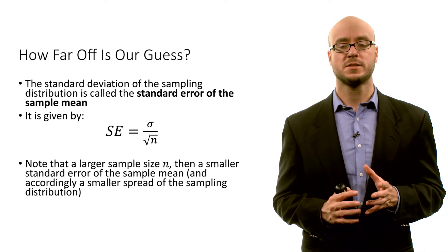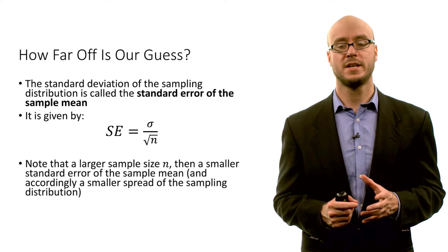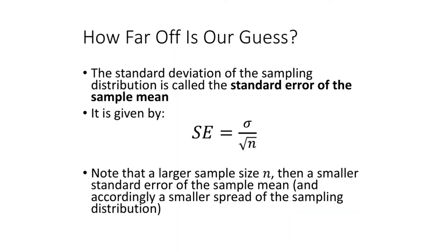A few things to note about this standard error of the sample mean. First, nature just gives us the population standard deviation — we don't have control over that. That's just a property of the particular variable we're looking at. So when we're looking at education in Iowa in the early 20th century, that standard deviation in the population for educational attainment in years, we don't have control over that. If the population standard deviation is smaller, that standard error is going to be smaller, and we would expect our point estimates to have less variability from sample to sample.